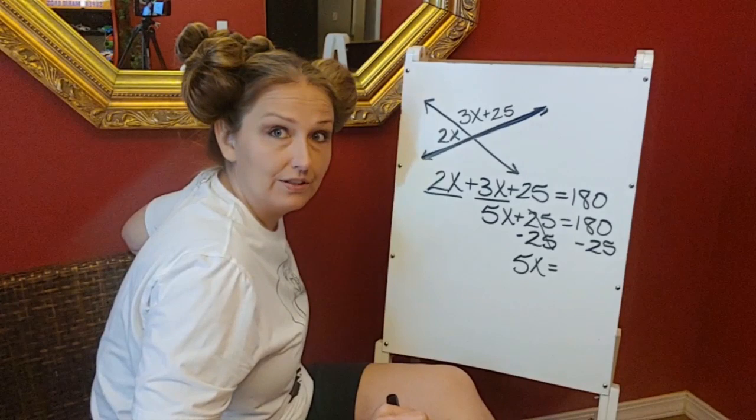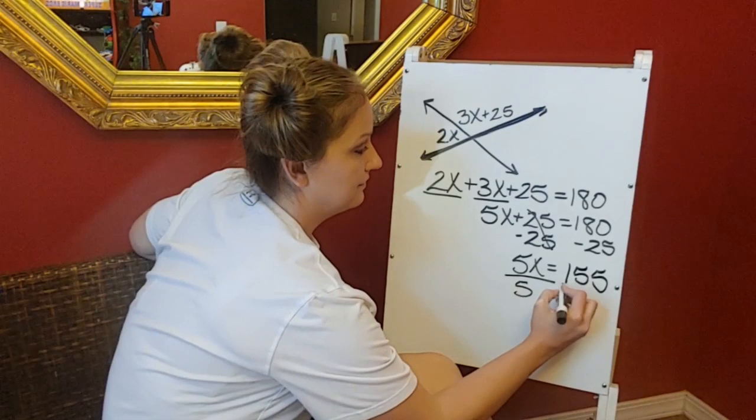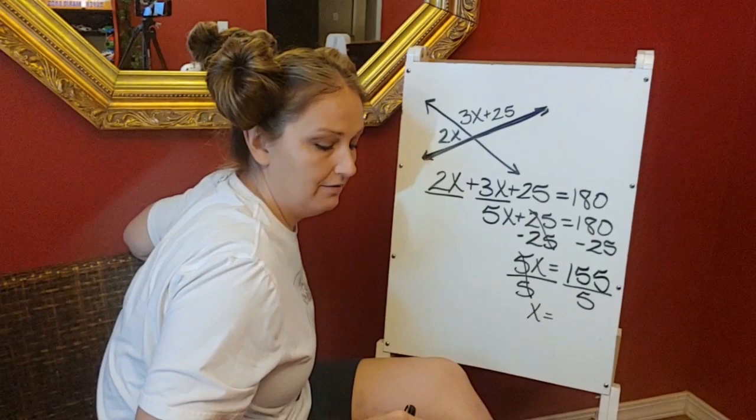Ms. Klein, if you're listening to this, I'm so sorry. I'm encouraging calculators. 5x equals 155. And then I'm going to divide by 5. So I'm going to take that 155 divided by 5, and x is 31.